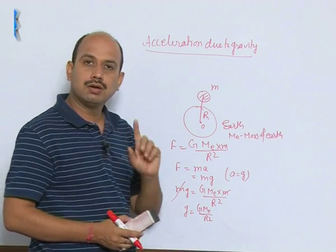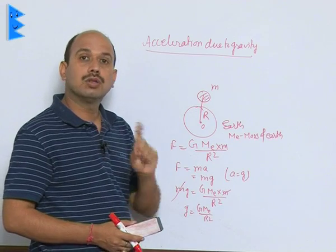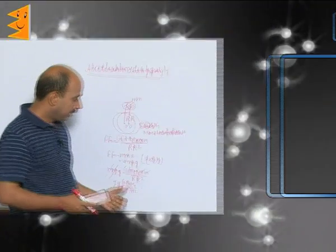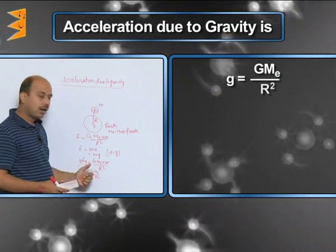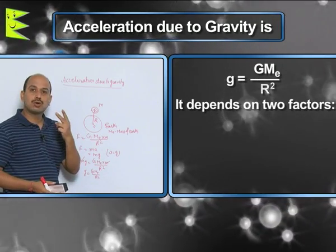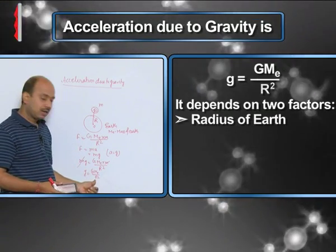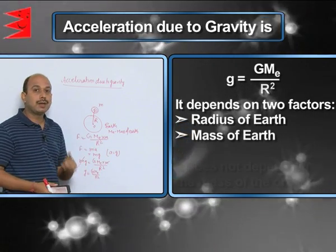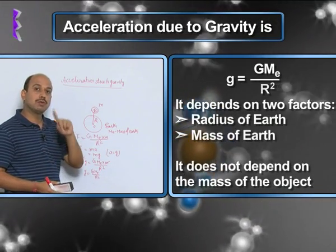So see here, acceleration due to gravity on the surface of Earth is G Mₑ upon R square. It depends on two factors, one is radius of Earth, another is mass of the Earth, but it does not depend on the mass of the object.